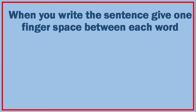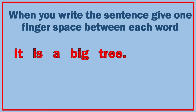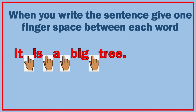Third point is: when you write a sentence, give one finger space between each word. When you write a sentence, give one finger space between each word. For example: it is a big tree. You can see that I have given one finger space between each word, so all the words should be separated. If we write them together it will not make any sense, so we have to give one finger space between each word.